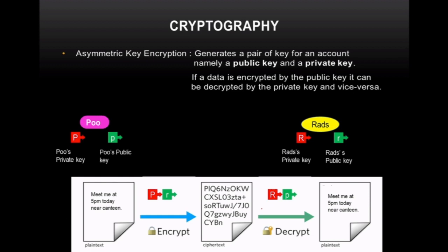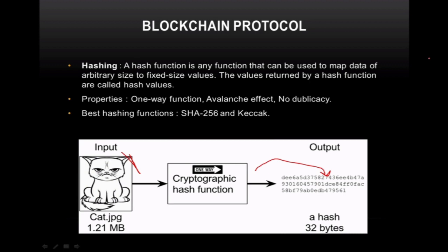The decrypted message is the same as the plain text sent by Pooh. This process ensures that Rats knows the message was sent by Pooh, because Pooh's private key was used. Pooh cannot later deny sending it. Similarly, only Rats can decrypt the message because her public key was used for encryption, and only her private key can decrypt it.